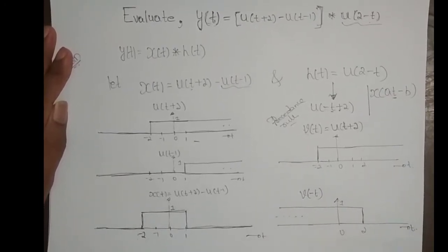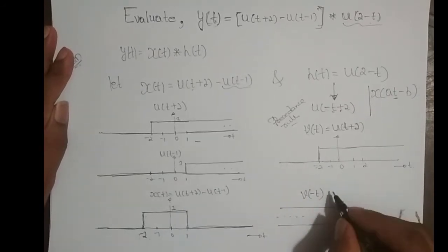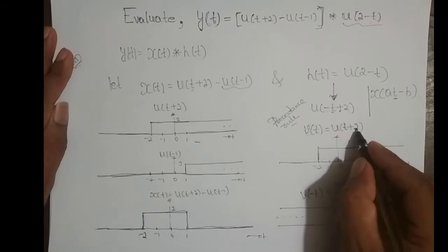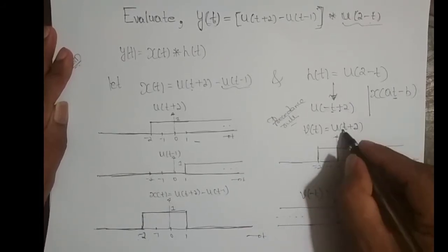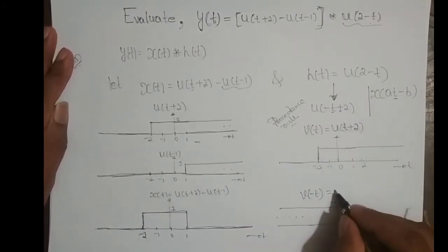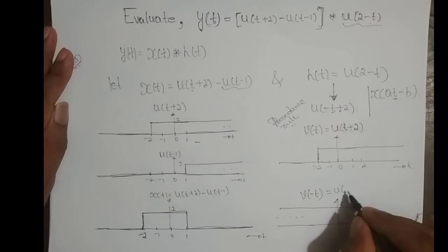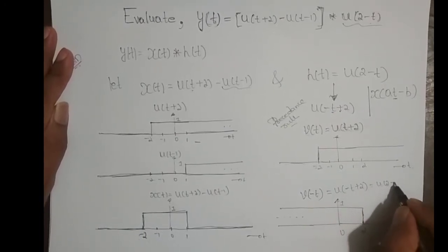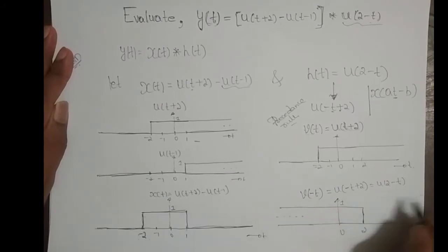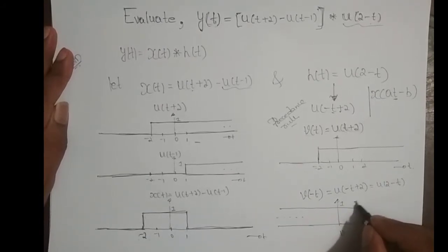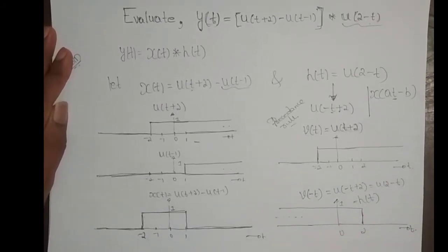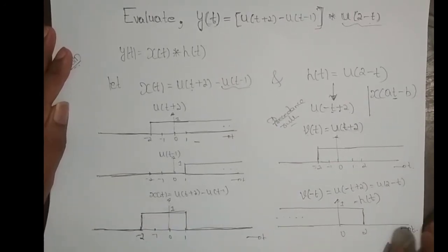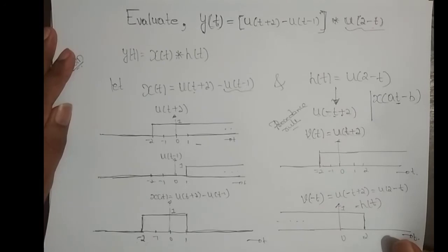This signal is actually: if v(t) = u(t+2), then v(-t) replaces t by -t, giving u(-t+2), which equals u(2-t). And u(2-t) is exactly h(t). So we have confirmed the sketches of x(t) and h(t).